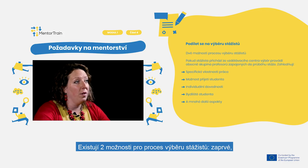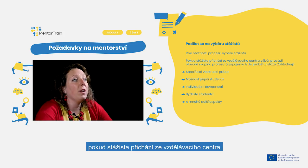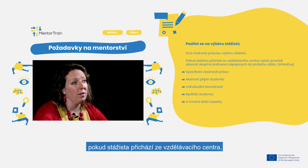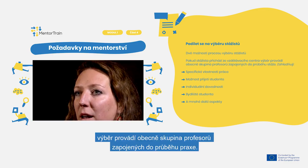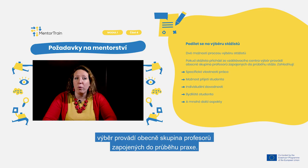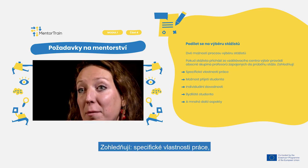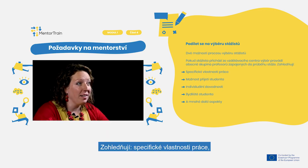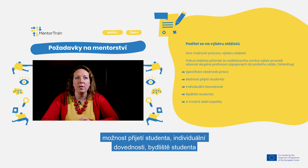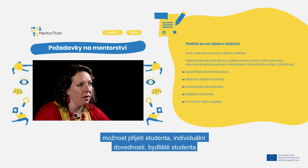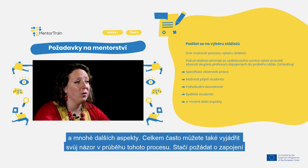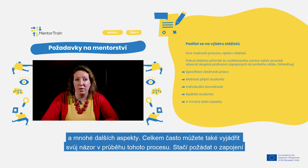There are two options of the selection process of the apprentices. Number one: if the apprentice comes from an education center, the selection is made generally by the group of professors involved in the training. They take into account the specific characteristics of the job, the possibility for the student being hired, individual skills, the student's place of residence, and many other aspects. Quite often you can also voice your opinion in the process — just ask to be involved.